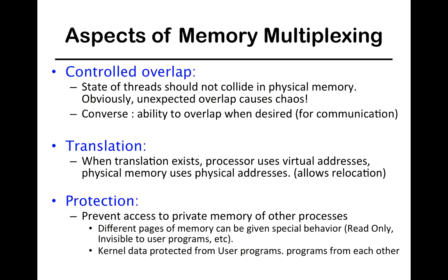Controlled overlap means that the state of threads should not collide in physical memory. We've already looked at this where we check the bounds before we actually issue the address — otherwise it's going to cause unexpected chaos. Conversely, when processes do want to share something, you want to have the ability to overlap memory pages or data. If two processes wish to share some piece of data, they should be able to do it easily, and you should be able to allow both processes to access that shared data.